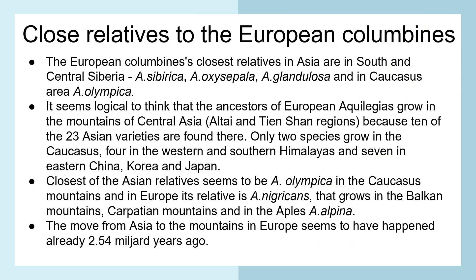Close relatives to the European Columbines. The European Columbines' closest relatives in Asia are in south and central Siberia: Sibirica, Oxysepala and Glandulosa, and then in Caucasus also Olympica. The ancestors of the European Aquilegias likely grew in the mountains of Central Asia, Altai and Tianshan regions, because 10 of the 23 Asian varieties are found there. Only two species grow in Caucasus, four in the Western and Southern Himalayas, and seven in Eastern China, Korea and Japan.